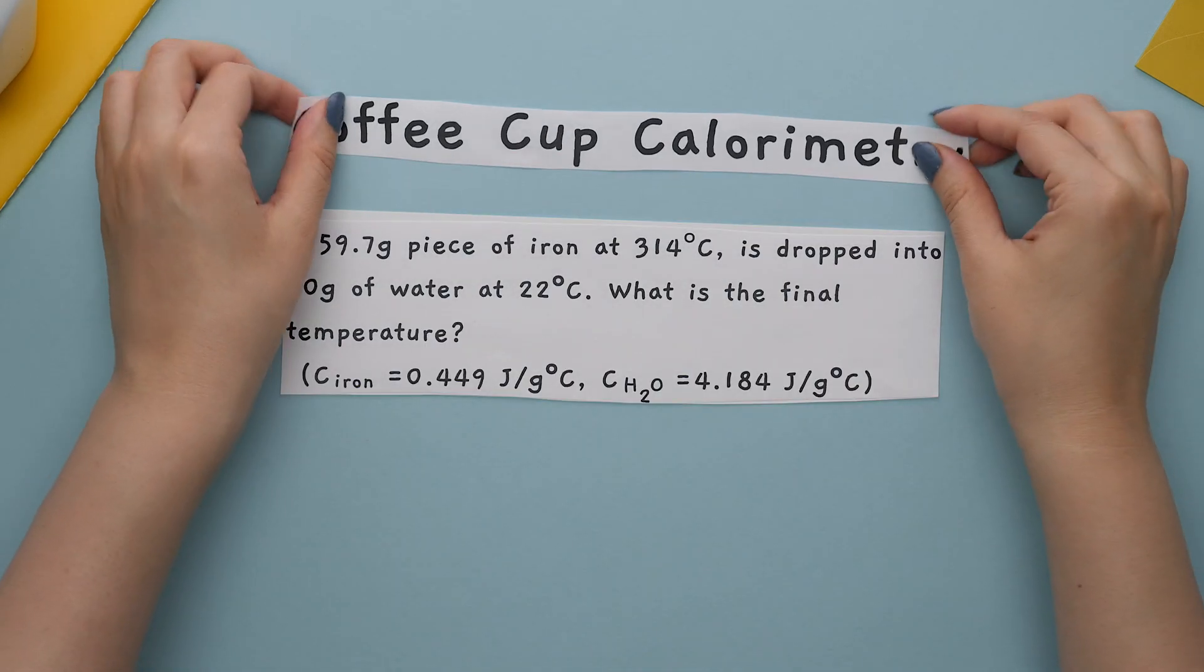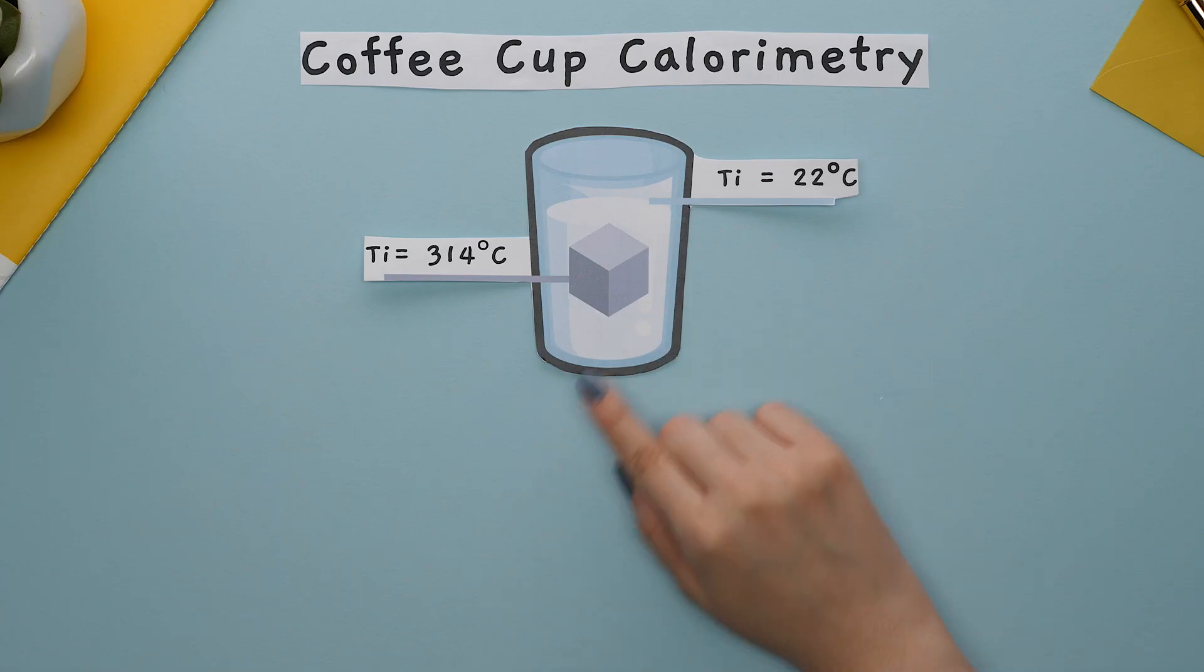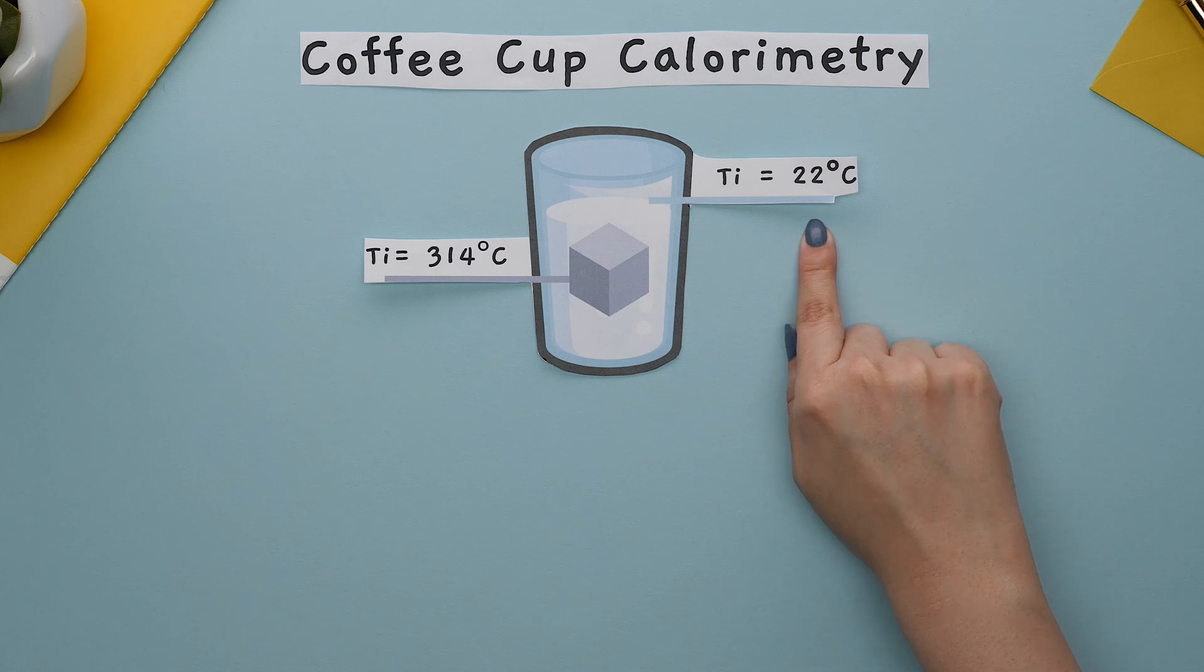This is an example of coffee cup calorimetry, which you will see once you learn thermochemistry. The concept is this: if we were to place a piece of metal that is initially 314 degrees Celsius into water that is initially 22 degrees Celsius,